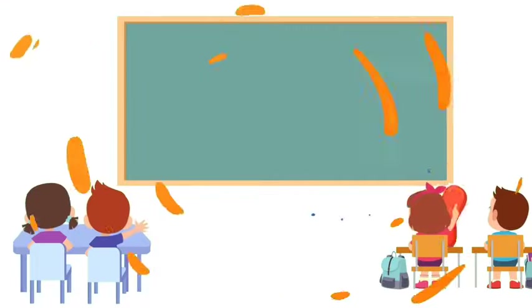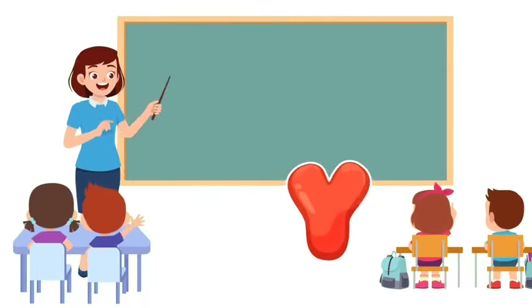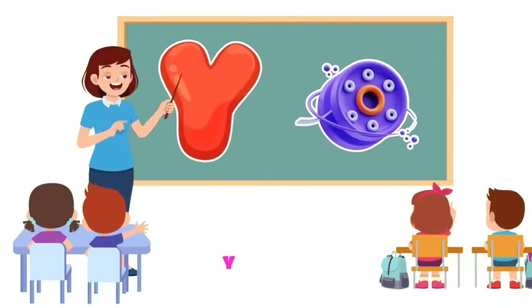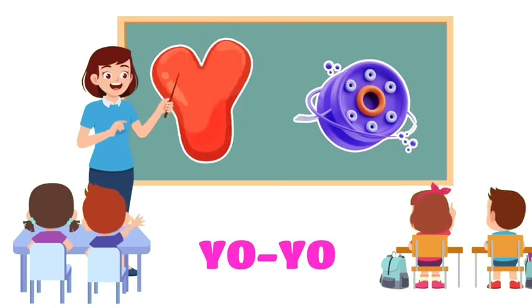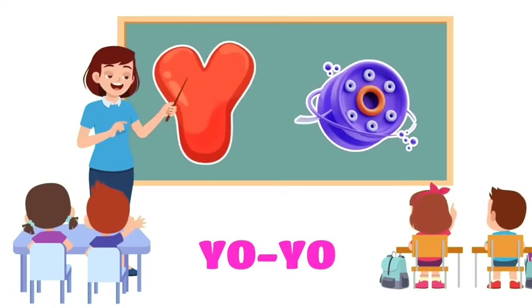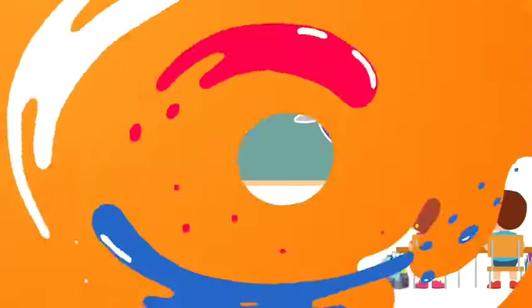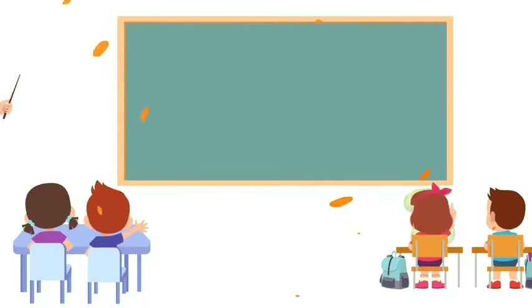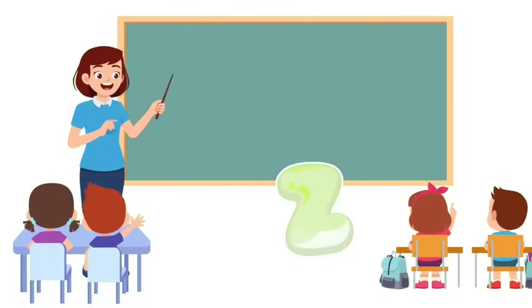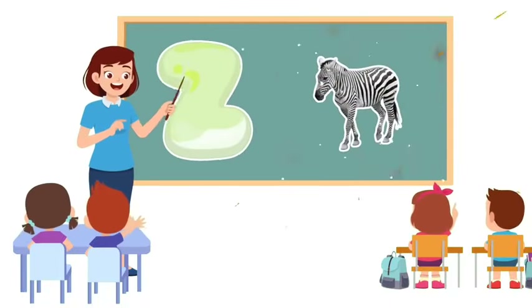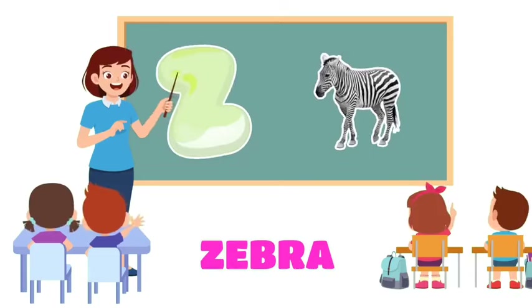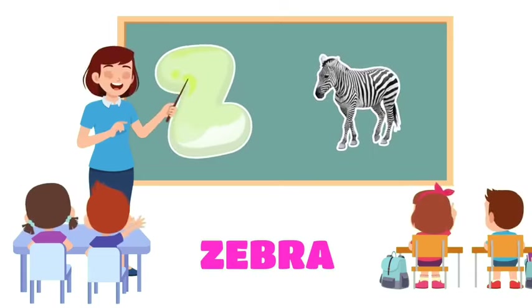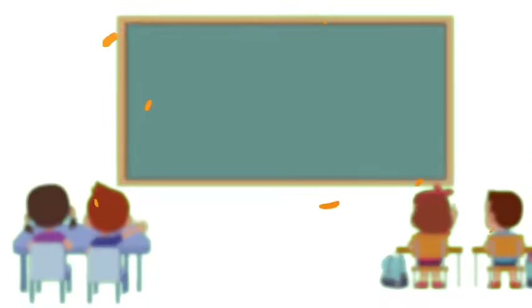Y is for Yo-yo. Y, y, yo-yo. Y, y, yo-yo. Y, yo-yo. Z is for Zebra. Z, z, zebra. Z, z, zebra. Z, zebra. Z, zebra.